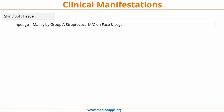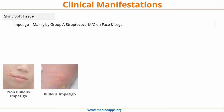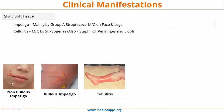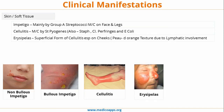Soft tissue infections: impetigo is mainly caused by Group A streptococci, most commonly seen on the legs and face. Non-bullous impetigo is generally caused by streptococci; bullous impetigo is generally caused by Staph aureus. Cellulitis is most commonly caused by Streptococcus pyogenes but can also be caused by Staph, Clostridium, and E. coli — it is a more severe infection in which the subcutaneous tissue is involved. Erysipelas is similar to cellulitis but restricted to the cheeks, face, and nasal bridge; because the lymphatics are involved, it gives a peau d'orange texture.